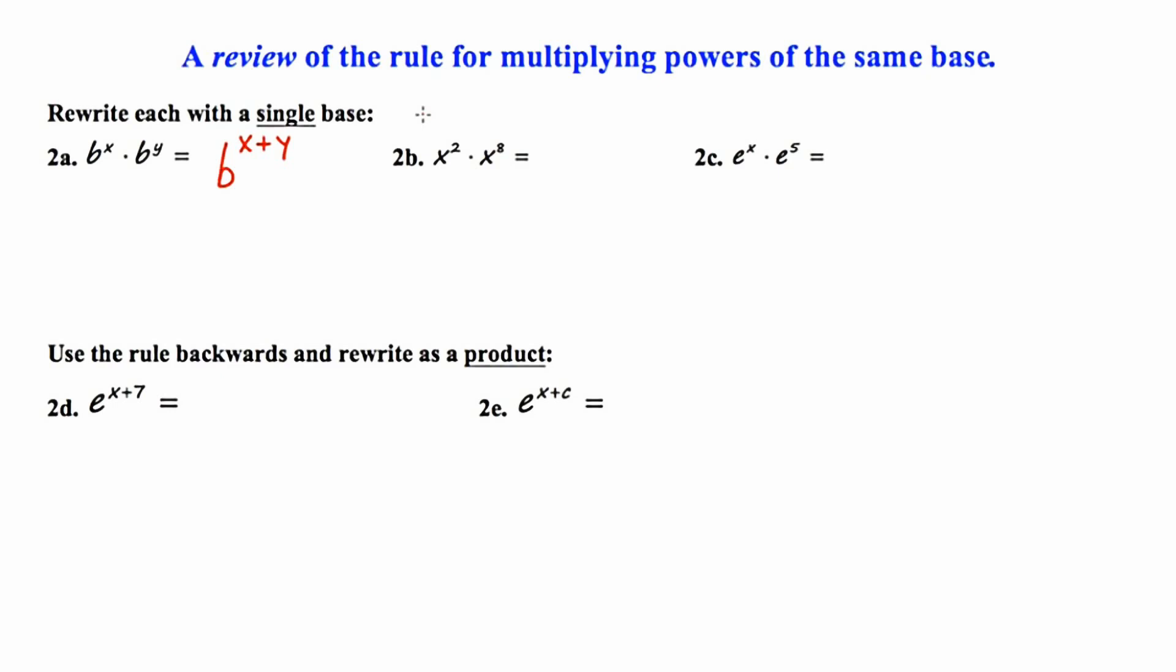Moving to 2b. Once again, we have an example where we are multiplying powers of the same base. This time, the base is x. So we will retain the base, and we'll add the exponents, 2 plus 8 or 10. Moving to example 2c, e to the x times e to the fifth. Once again, we're multiplying powers of the same base, and that base is e. So we're going to retain the base, and we're going to add the exponents.